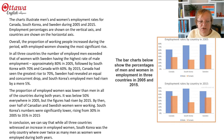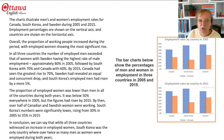The proportion of employed women was lower than men in all of the countries during both years. It was below 50% everywhere in 2005, but the figures had risen by 2015. By then, over half of Canadian and Swedish women were working. South Korea's numbers were significantly lower, rising from 30% in 2005 to 35% in 2015.